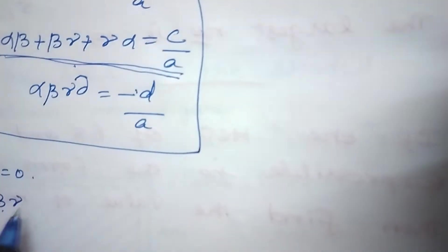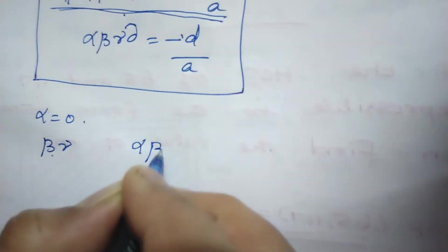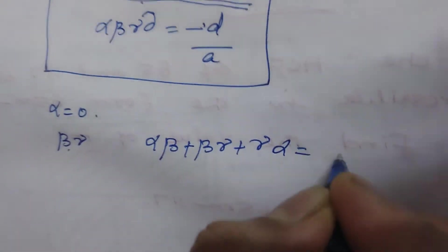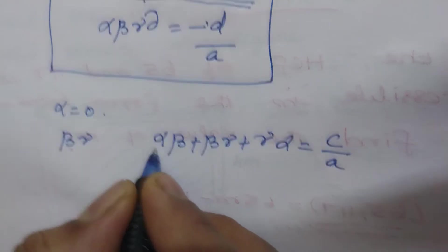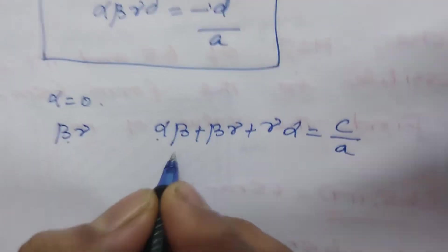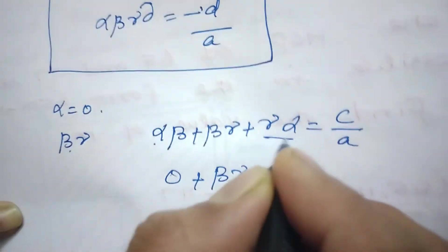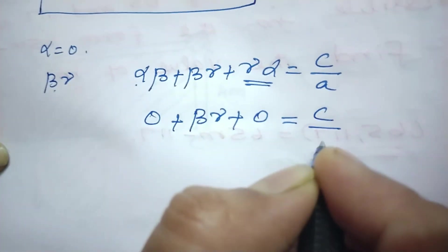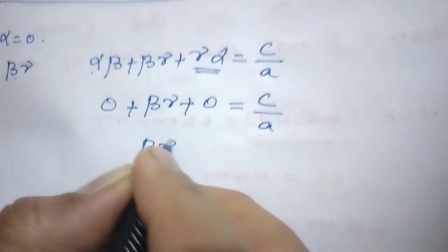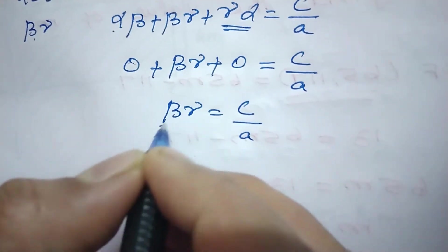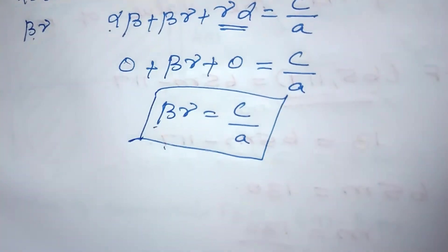For that, beta·gamma is present in this relation: alpha·beta + beta·gamma + gamma·alpha = C/A. Here alpha is 0, therefore the terms with alpha become 0. So 0 + beta·gamma + 0 = C/A. Therefore beta·gamma = C/A. So the product of the other two roots is C/A. This is the answer.